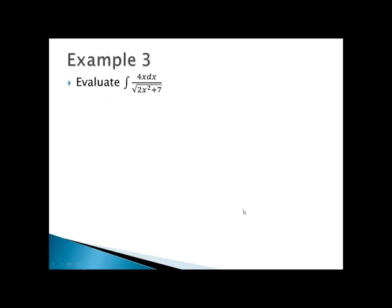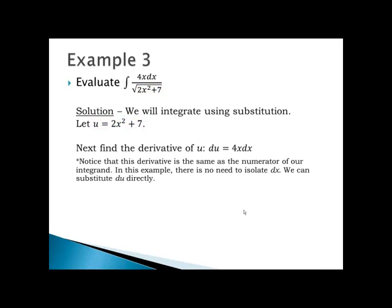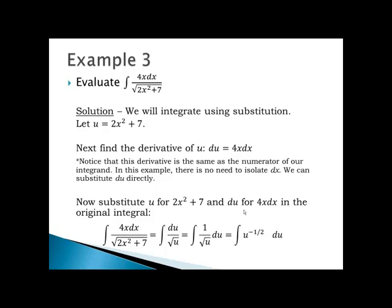Example 3: Evaluate the integral of 4x divided by the square root of 2x squared plus 7 with respect to x, using substitution. The denominator is composite — the outside function is the square root and the inside function is 2x squared plus 7 — so I'll let u equal 2x squared plus 7. The derivative of u is 4x dx, and notice that du is the same as the numerator. So there is no need to isolate dx; I can substitute du directly, replacing u for 2x squared plus 7 and du for 4x dx. The integral becomes the integral of 1 over the square root of u du, which is the same as u to the negative one-half power with respect to u.